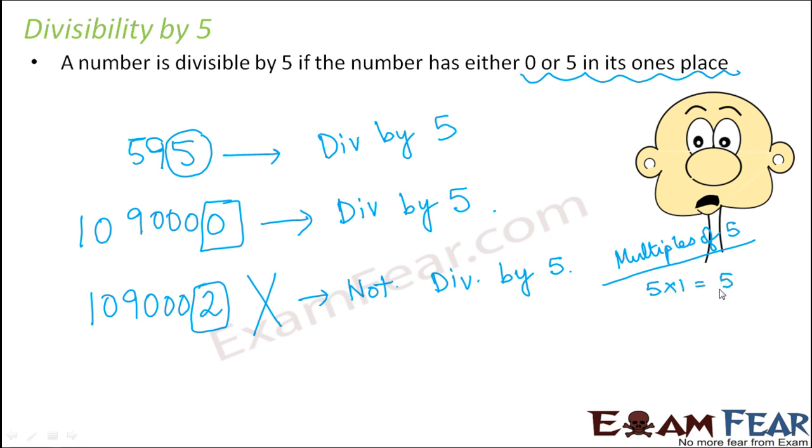How would the multiples of 5 look like? It would be something like this: 5×1=5, 5×2=10, 5×3=15, 5×4=20, 5×5=25, and so on.